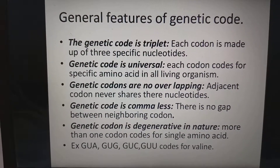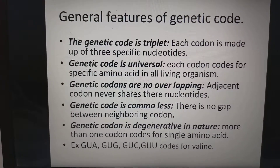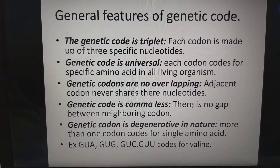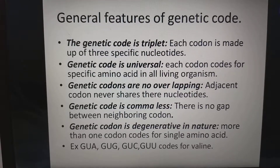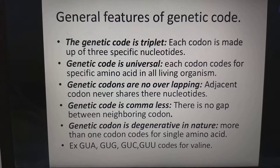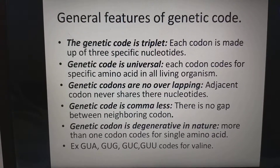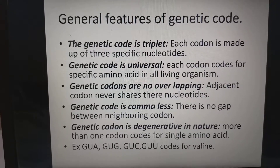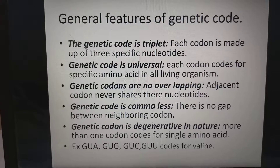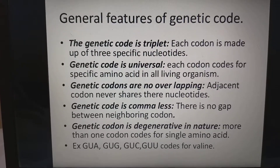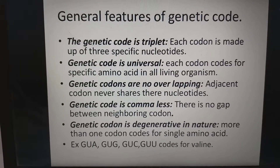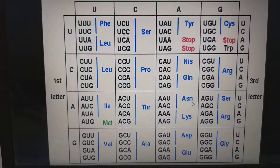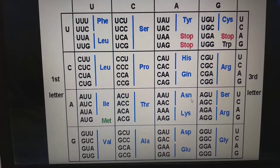General features of genetic code: The genetic code is a triplet — each code is made up of three specific nucleotides. The genetic code is universal — each codon codes for a specific amino acid in all living organisms. Genetic codes are non-overlapping — adjacent codons never share their nucleotides. Genetic code is comma-less — there is no gap between neighboring codons. Genetic code is degenerate in nature — more than one codon codes for a single amino acid. For example, GUA, GUG, GUC and GUU all code for valine.